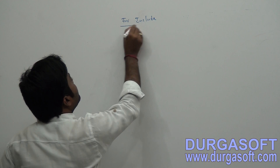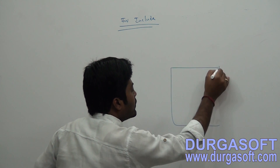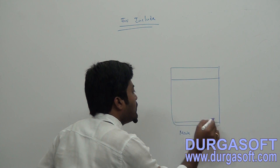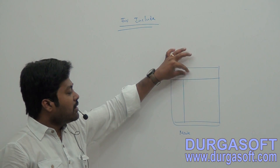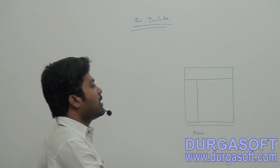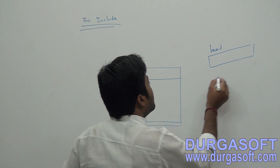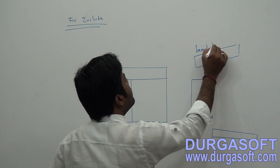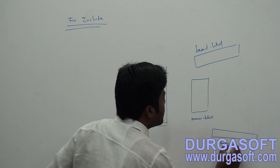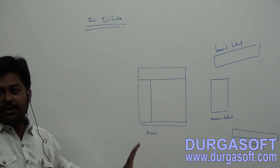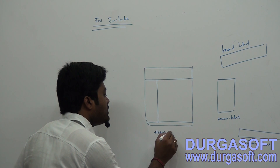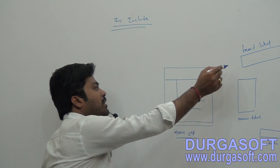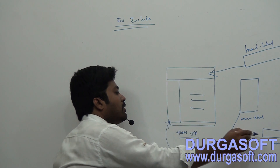For include operations, from one page to another page: if you have a main page and you want to load a header, footer, and menu into it, and you have separate pages like menu.html, header.html, and footer.html, you can include these into your home.jsp page along with the body content.